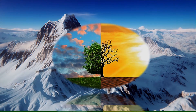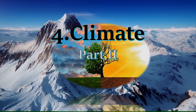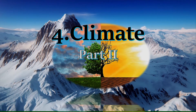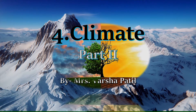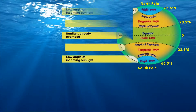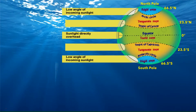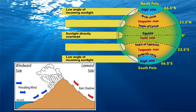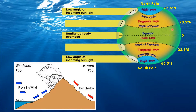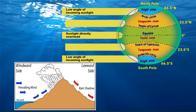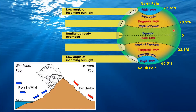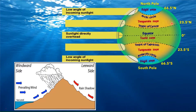Welcome back students to the second part of our fourth chapter on climate. Today we are going to study figure 4.3 on page number 26 of our geography textbook. In the last video we already studied the heat zones of the world and the orographic type of rainfall. India lies in the northern hemisphere on the eastern side of the world, and the Tropic of Cancer passes through mid-India. So India experiences both the tropical and the subtropical type of climate.